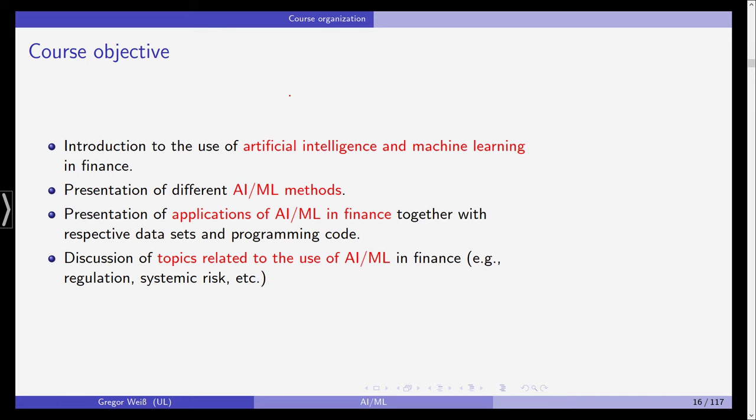And exemplify how this field of AI and ML can be used in financial economics. For example, in pricing assets, in forecasting price changes, in modeling risk factors, in modeling huge and big data samples and so on. And then, last but not least, I think it's important not only to focus on the statistical side of AI and ML, but I also want to focus on some related topics like, for example, regulation. How should AI and ML be regulated?